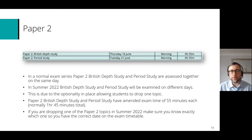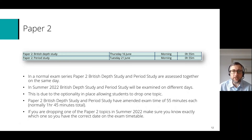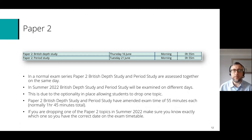Looking at paper 2 in a bit more depth: in a normal exam series, the British Depth Study and Period Study are assessed together on the same day, but this summer they'll be assessed on different days. The exam time is 55 minutes for each paper, due to the optionality in place. If you're dropping one of the paper 2 topics in summer 22, make sure you know exactly which one so you have the correct date on the exam timetable.